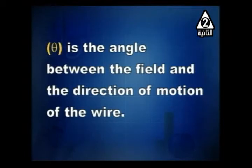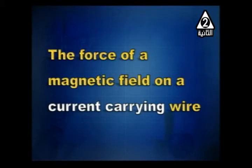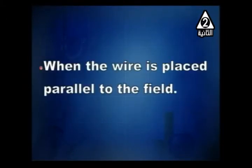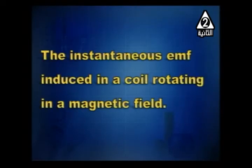Note: θ is the angle between the field and direction of motion of the wire. When does the force of a magnetic field on a current-carrying wire equal zero? This happens when the wire is placed parallel to the field. Force is given by BIL·sinθ; force equals zero when θ = 0.